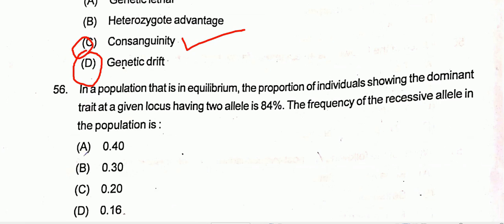Question number 56: In a population at equilibrium, the proportion of individuals showing the dominant trait at a given locus with two alleles is 84%. The frequency of the recessive allele in the population is — option A is the correct one, that is 0.40. For the solution to question 56, I will put the solution in the description box, kindly go through it.